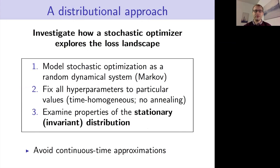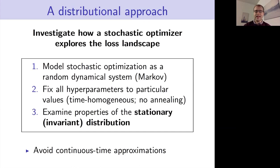This exploration phase is really what we want to study, and we're going to take a slightly unorthodox distributional approach. We'll investigate how a stochastic optimizer explores a loss landscape by modeling an optimizer as a random dynamical system — in particular, as a discrete-time Markov chain. We'll fix all hyperparameters to specific values, so we're not considering annealing or step-size schedules, giving us a time-homogeneous Markov chain. We're interested in large step-size regimes to examine exploratory behavior.